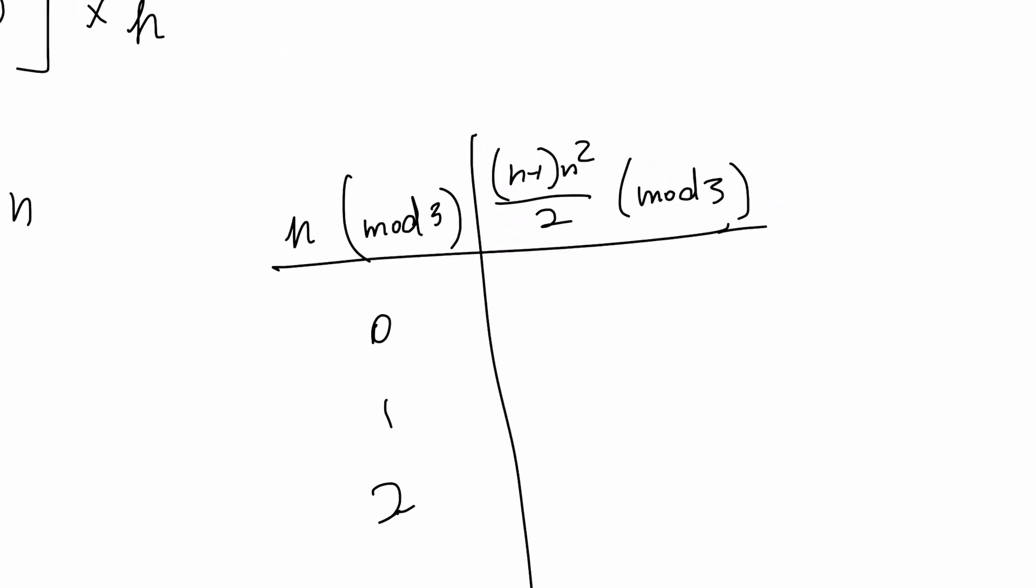If we have this n value to be divisible by 3, 0 mod 3, then it has to have a value of 0. If we have 1 mod 3, then this value becomes 0. So both of these are 0.